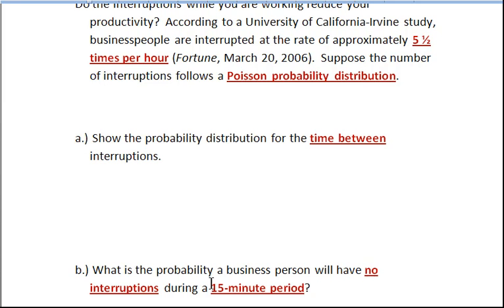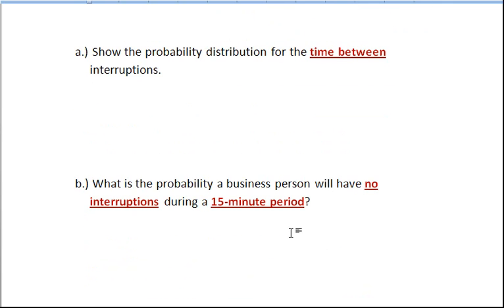Now in Part B we're being asked what is the probability a business person will have no interruptions during a 15 minute period. Now with our Poisson probability distribution we would have recorded that x was equal to zero. But now we're concerned with this 15 minute period. So we are working with continuous random variables, therefore we need to use the exponential distribution.